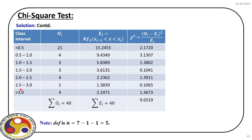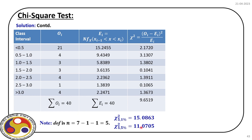We have seven different classes and estimate one parameter for the distribution, because our null hypothesis says it is an exponential distribution with only one parameter. So the degrees of freedom for the chi-square is 7 - 1 - 1 = 5. We check whether our null hypothesis is accepted at confidence limits of 1% and 5%.